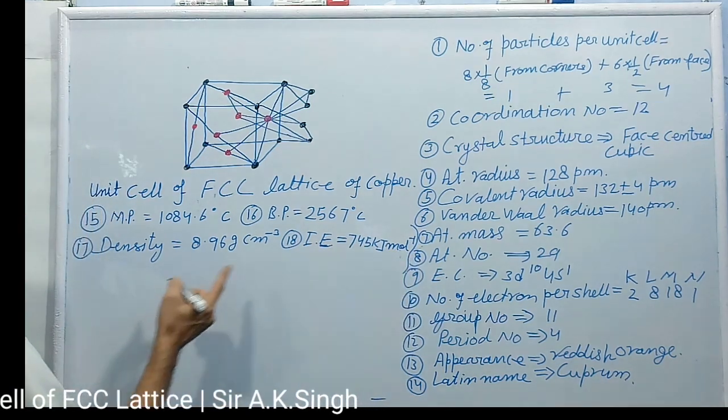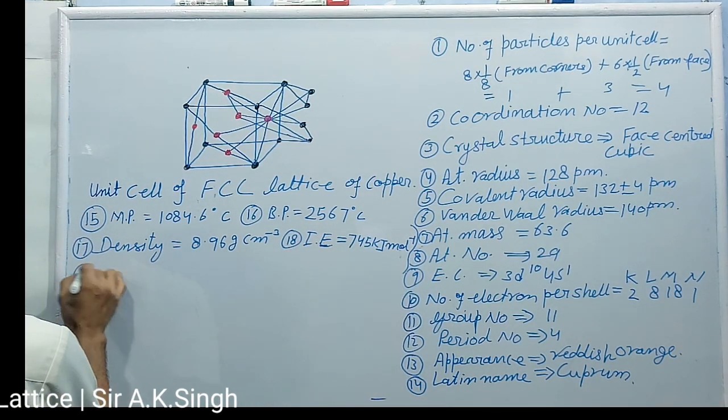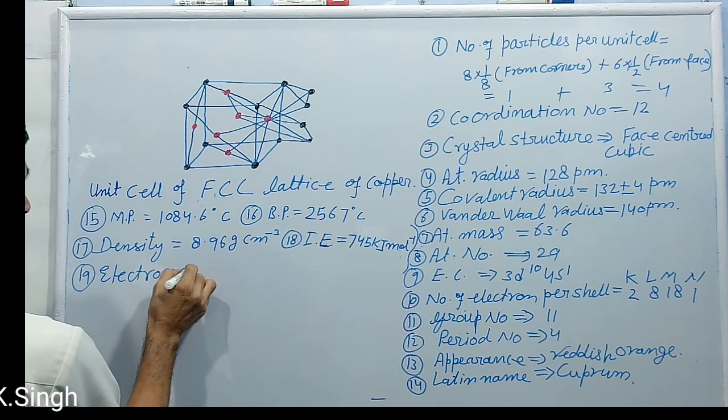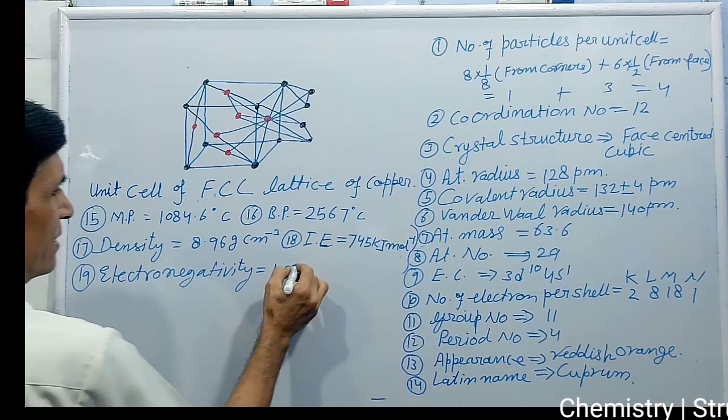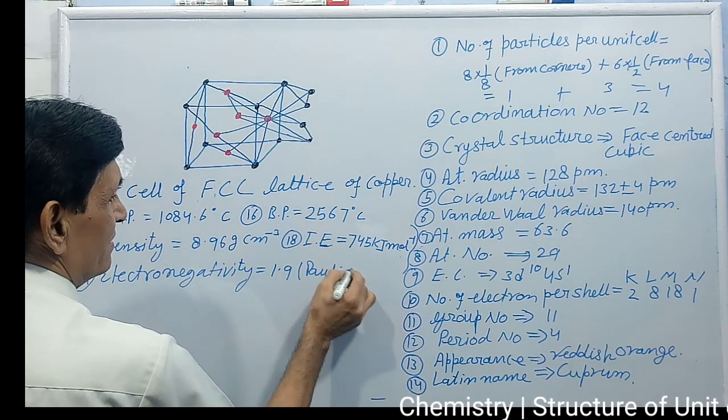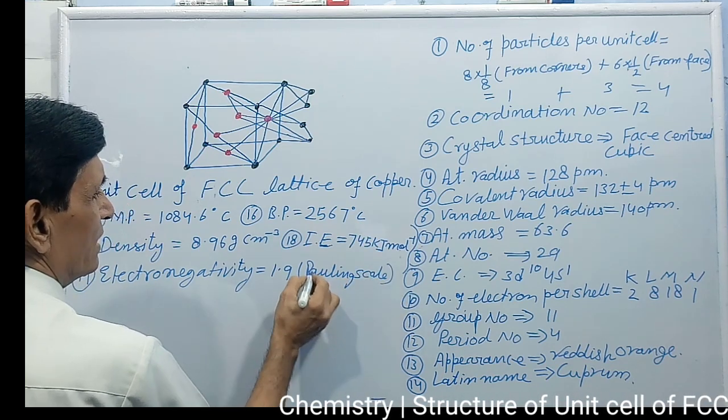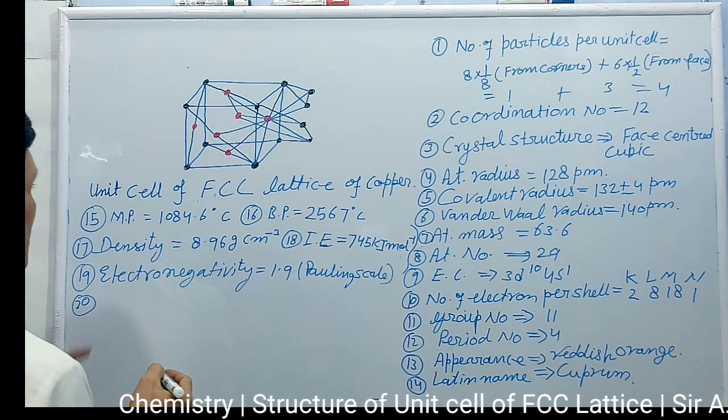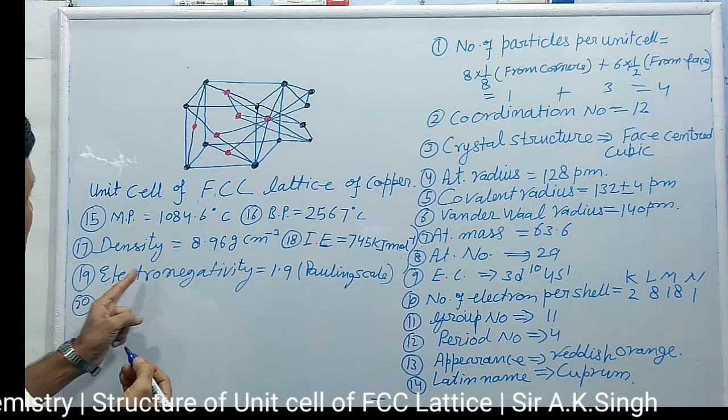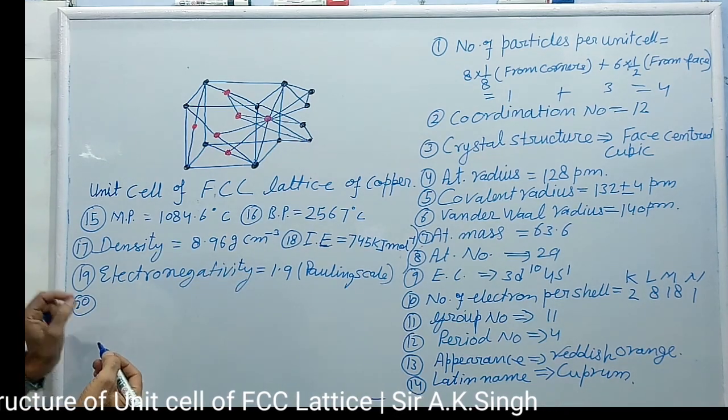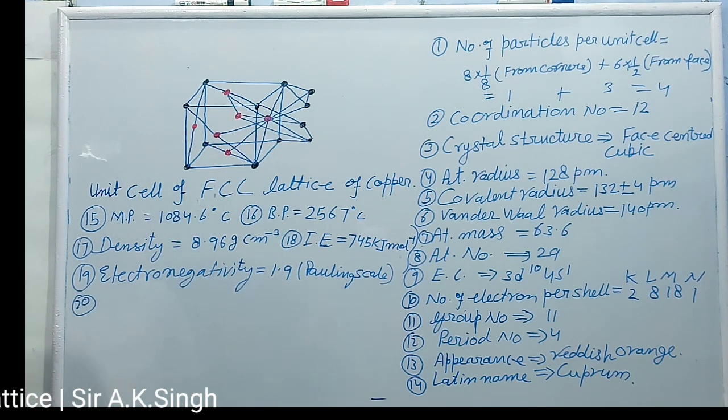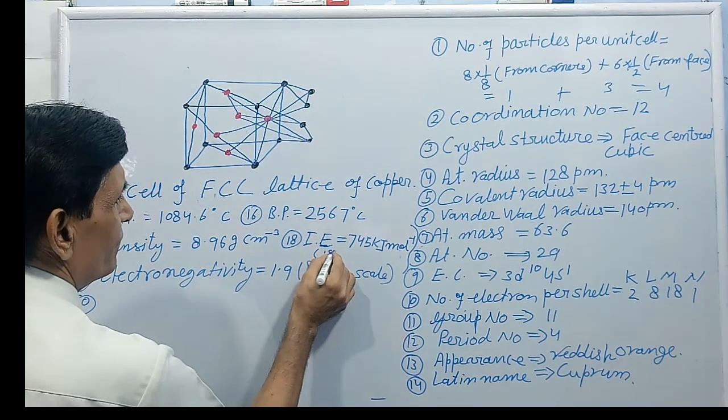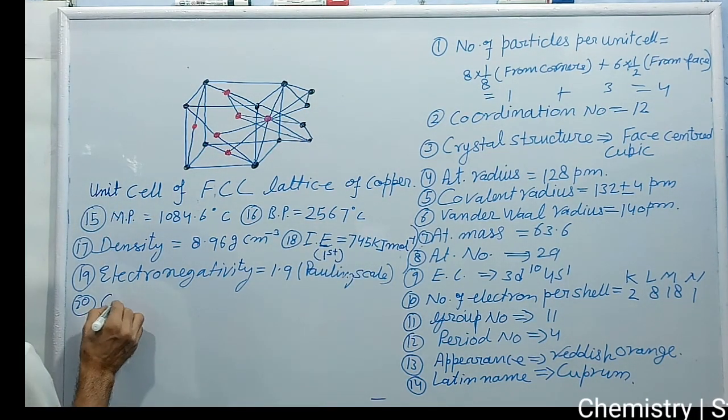Now next is electronegativity, electronegativity is 1.9 on Pauling scale. This is first ionization energy, this is the first ionization energy I have written there.